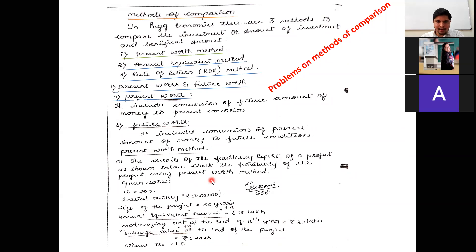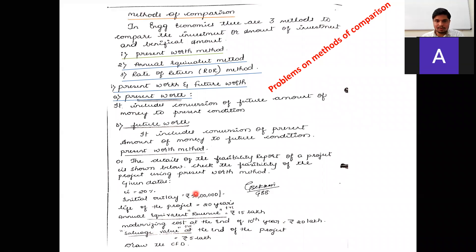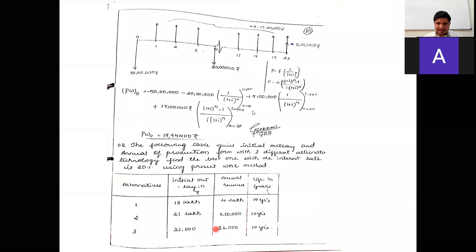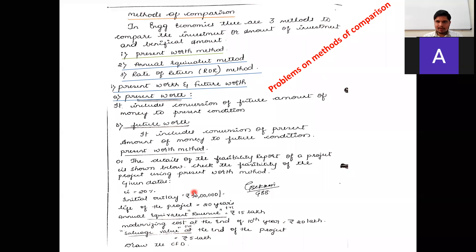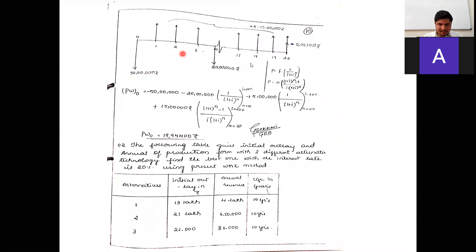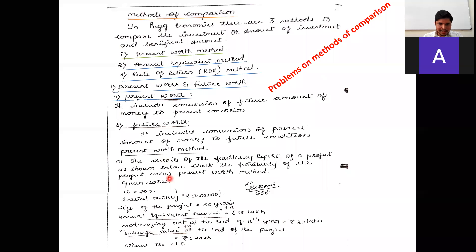Before solving the problem, we draw the Cash Flow Diagram (CFD). The horizontal axis covers 20 years (total life of the project). The initial outlay of Rs. 50 lakhs is shown as a downward vertical line at year 0, because it is the initial investment — an outgoing amount.